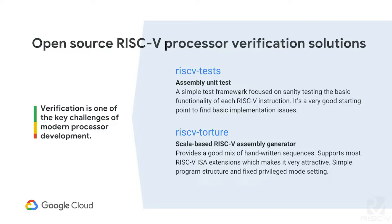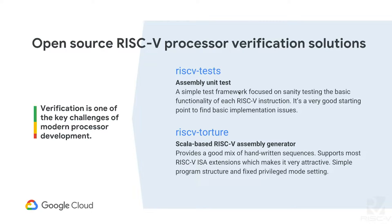On the other hand, the torture test is a Scala-based random RISC-V instruction generator which supports a lot of random instruction extensions, making it attractive. But from our view, the programs generated by the torture test are actually pretty simple. There are no complex branch structures, no random privilege mode setup, and the page table is pretty much fixed. A lot of things are not being randomized. Also, it's Scala-based — Scala is a very powerful language, but for DV engineers it's a language barrier to understand how it works and make contributions.